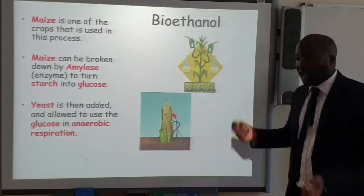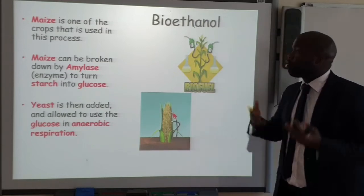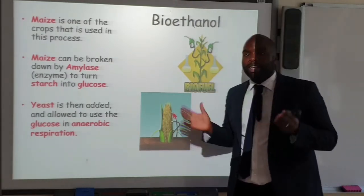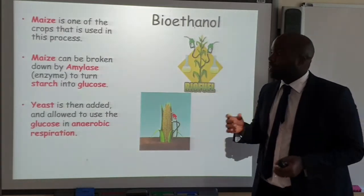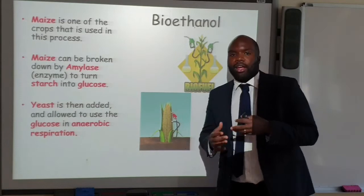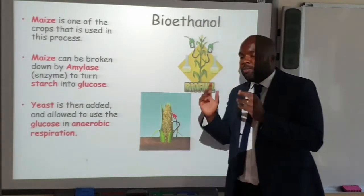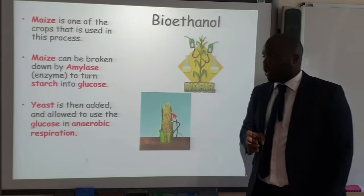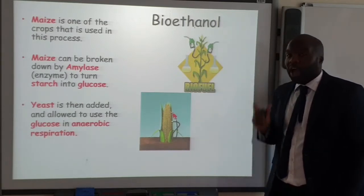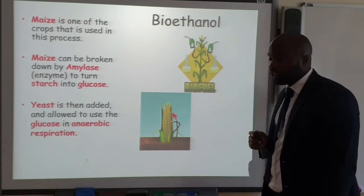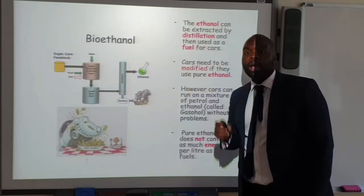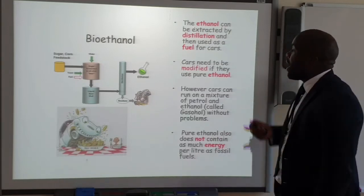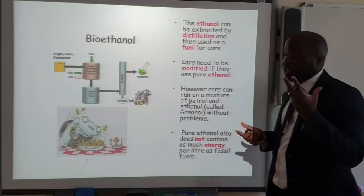How do we make bioethanol? We can use crops such as maize. The maize is first broken down by the enzyme amylase, which breaks the starch — a polysaccharide — down to the disaccharide maltose, which is then broken down further into glucose. The yeast then uses that glucose during anaerobic respiration — fermentation — to produce ethanol and carbon dioxide. The ethanol produced can be extracted by distillation and used as a biofuel.